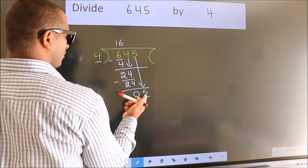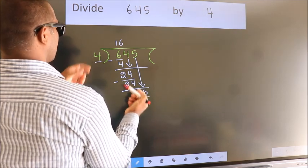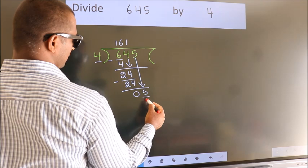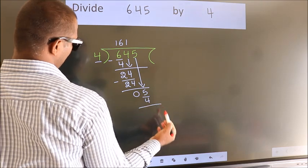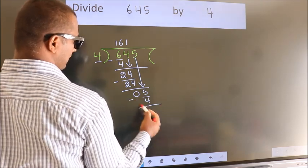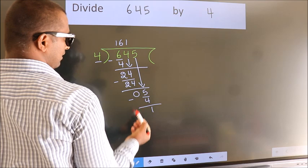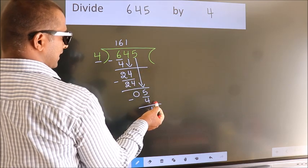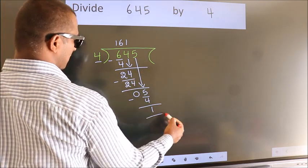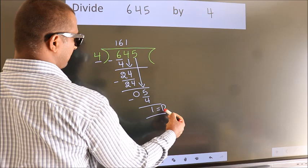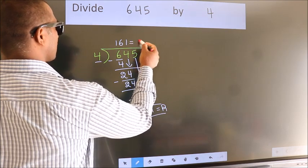A number close to 5 in 4 table is 4 once 4. Now, we subtract. We get 1. No more numbers to bring down. So, we stop here. This is our remainder. This is our quotient.